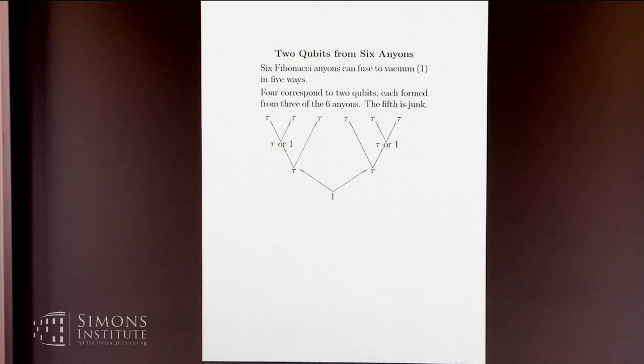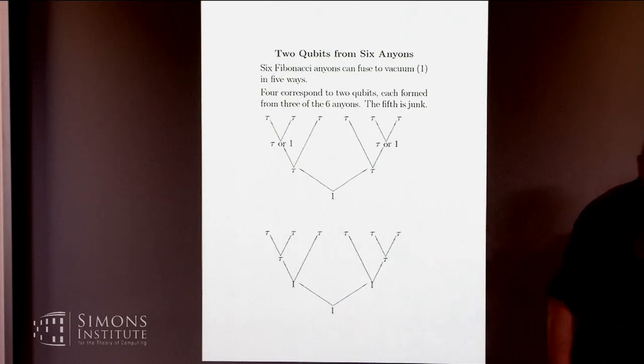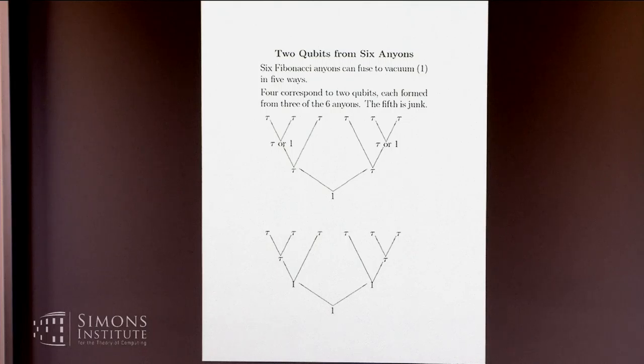It says here four of the five options correspond to the qubits that you want. The fifth option is where each side individually fuses to vacuum. And then, well, I guess two vacuums fuse to one vacuum, which is not much going on. That's junk. That's not part of the two qubit space that you want. And one of the reasons that Yuri and I are worrying about these things is that one wants to know how much computation can you do, how much braiding can preserve the good space, the four qubit space, rather than producing results that have components in the direction of the fifth basis vector.